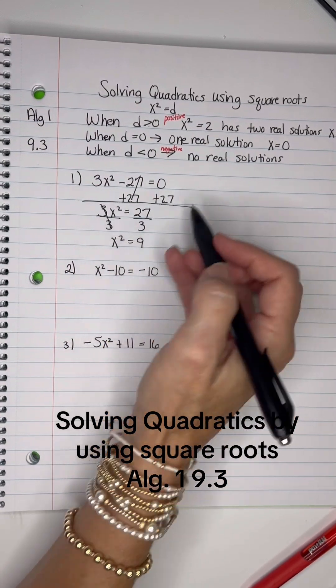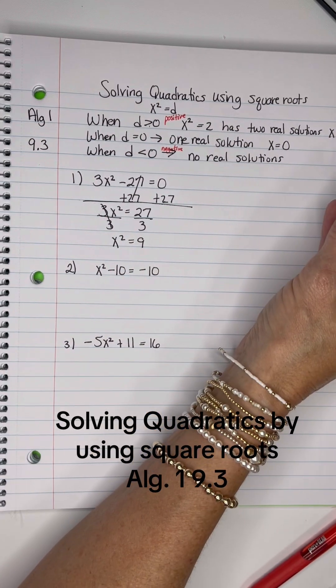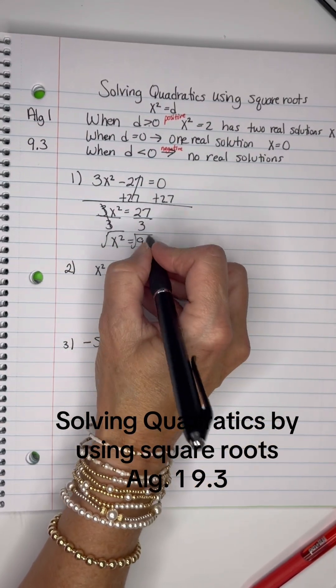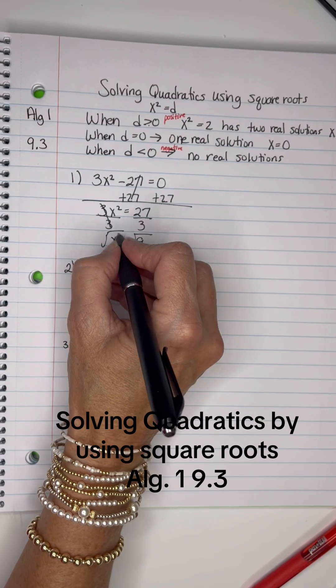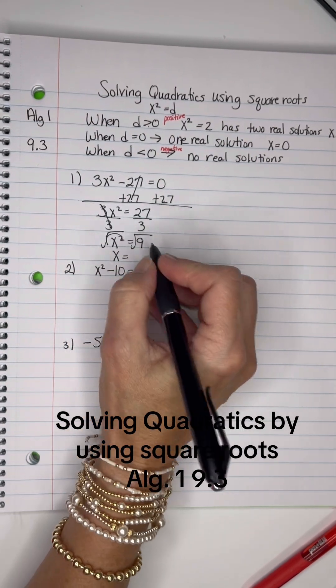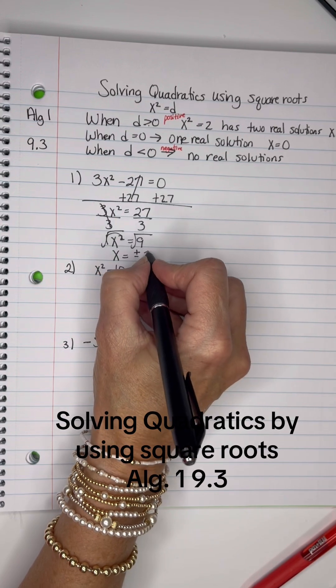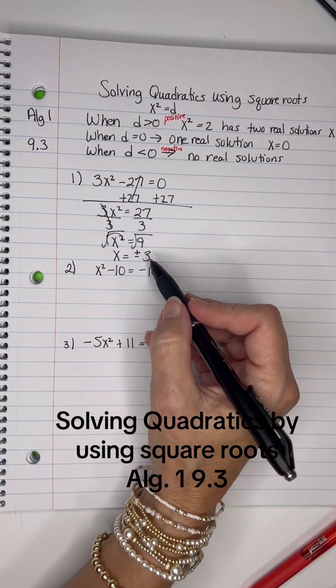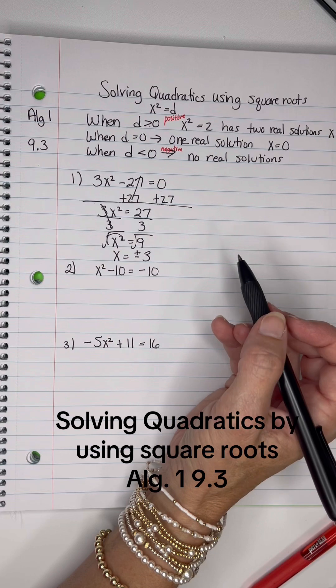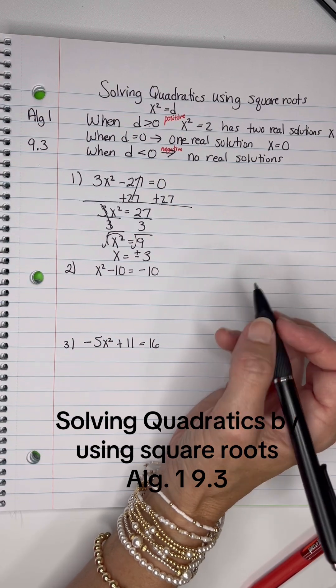So that is positive, so there should be two real solutions. I'll take the square root because it's the opposite of square, and I'll be left with x equals positive or negative square root of 9, which is 3. So two solutions: positive 3 and negative 3. If I wanted to graph that, it crosses the x-axis.